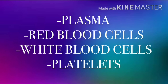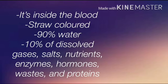Now let's discuss plasma, red blood cells, white blood cells, and platelets. Plasma is actually inside the blood. It is straw-colored, 90% water, and 10% dissolved gases, salts, nutrients, enzymes, hormones, waste, and proteins.